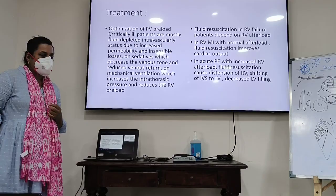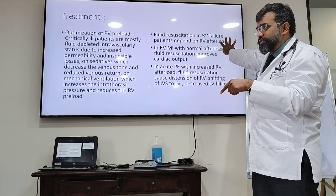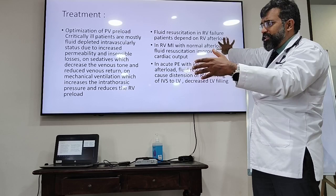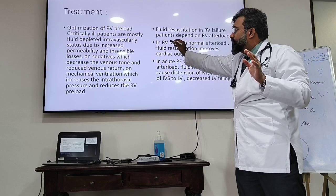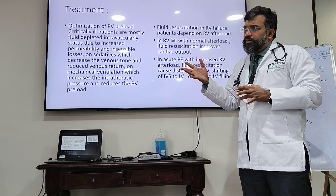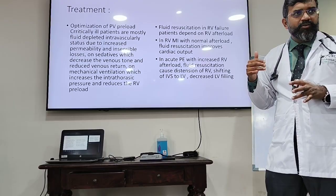In RV myocardial infarction — where V4R or V3R has ST elevation — there is no pulmonary hypertension and the RV is acting as a conduit. So give fluids, because the fluid will move from the RV through to the LV. The right side of the heart has a problem with afterload, not preload — so you do not reduce preload. In RV failure with elevated afterload such as in ARDS, however, fluid resuscitation causes more RV distension, shifting the septum into the LV and decreasing output.